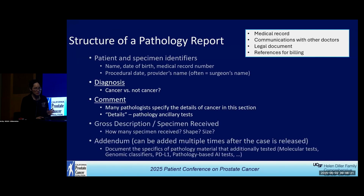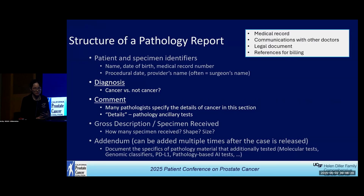When it comes to details about certain disease features, that will be a discussion in depth with your doctor. In general, any pathology report — whether you get a prostate, non-prostate, or benign tumor — there are basically five components in any report.